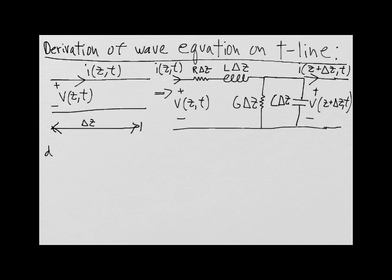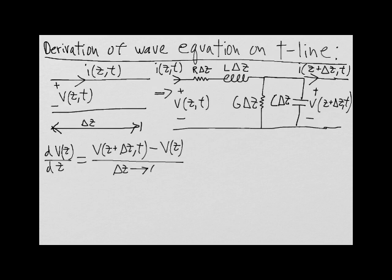From calculus, we know that the derivative of the voltage with respect to the space variable z, in this particular circuit, is equal to the difference between the output voltage and the input voltage, as the length of the transmission line delta z approaches zero. And from circuit theory, this is equal to minus R plus j omega L times the current I of z.